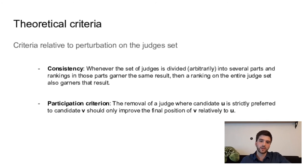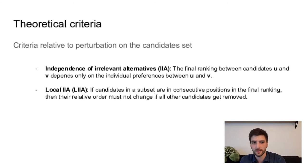The three last theoretical criteria we propose are relative to perturbation on the candidate set. The first one is the independence of irrelevant alternatives, which is simply that the final ranking between two candidates should only depend on the preferences of the judges for these two candidates. So the other candidates should not be important for the final position of these two. There is also the local version of the IIA criteria which says that if candidates in a subset are in consecutive positions in the final ranking, then their relative order must not change if all other candidates get removed. And it's a weaker criteria.